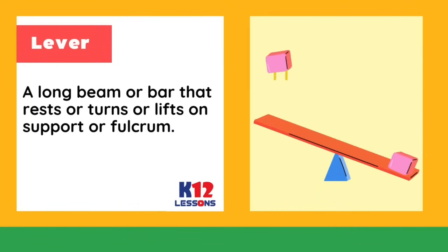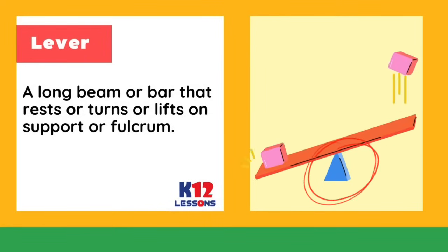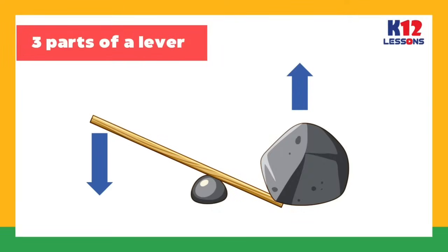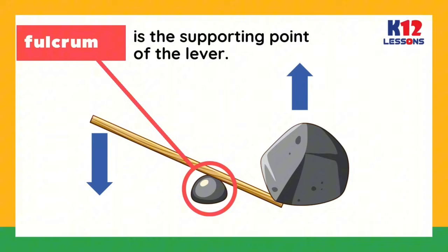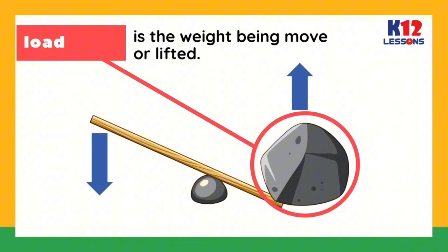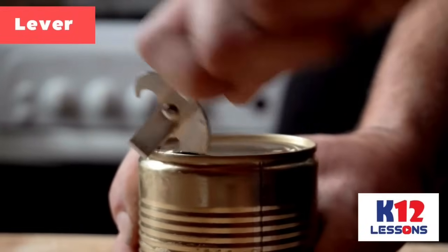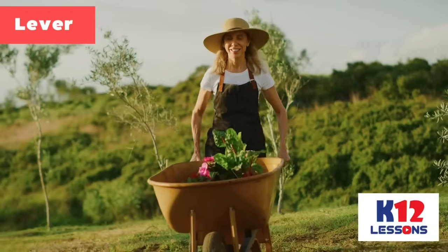Lever: a long beam or bar that rests, turns, or lifts on a support called a fulcrum. The lever has three parts: fulcrum, load, and effort. The fulcrum is the supporting point of the lever. Effort is the force used to cause movement. Load is the weight being moved or lifted. Examples: can opener, tweezers, and wheelbarrow.